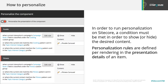To use personalization in Sitecore, a content author needs to add personalization rules to a rendering. The personalization rules define the conditions under which specified content will be shown or hidden. This is configured in the presentation details of a Sitecore item.